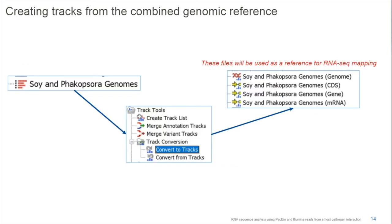However, I need to convert this combined standalone synthetic reference back into tracks, because for RNA-Seq I actually need tracks. I do this using the Convert to Tracks tool, creating tracks of the genomic sequence and all annotation layers. Now I have all these tracks and can start the actual RNA-Seq analysis.